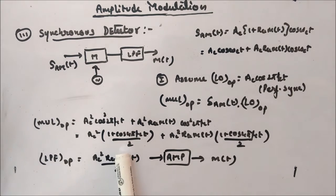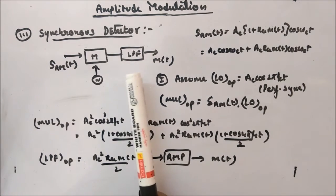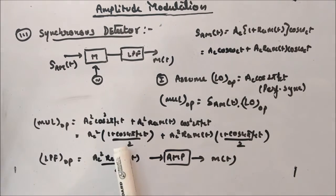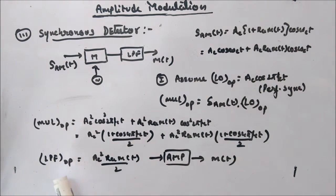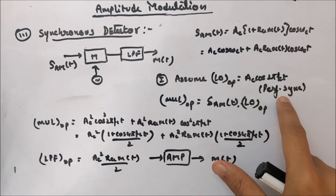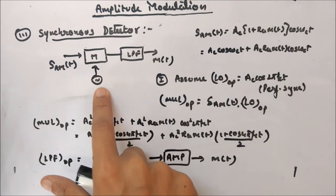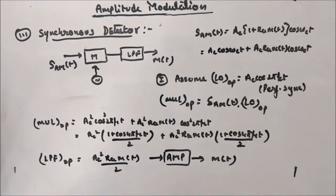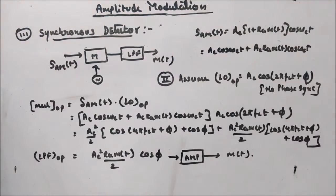Passing this signal through a low-pass filter, you get Ac²/2 and Ac²·ka·m(t)/2, because the second terms contain frequency 2fc which is much greater than the message bandwidth W and are blocked. The Ac²/2 term is DC and can be blocked by a capacitor. So at the LPF output you get only Ac²·ka·m(t)/2. The constant factor Ac²·ka/2 can be removed by an amplifier, and finally you recover m(t). This works because there was perfect synchronization — the local oscillator had no phase offset and the same frequency as transmitted.